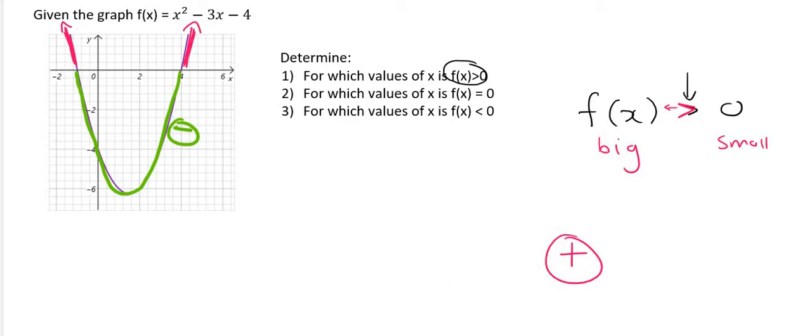So, for which x values is the graph positive? Well, it's none of these x values because these x values, for example, if I choose this x value here and I go look at the value of the graph, it's all the way down there. So what I'm interested in is all the x values over here.